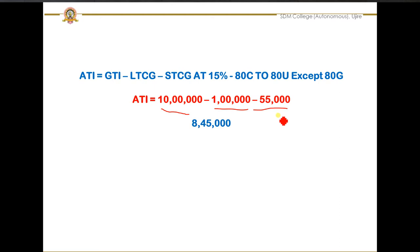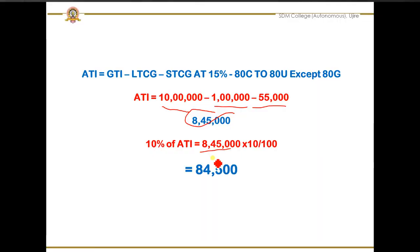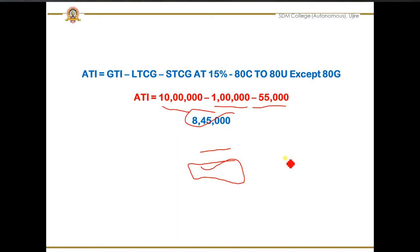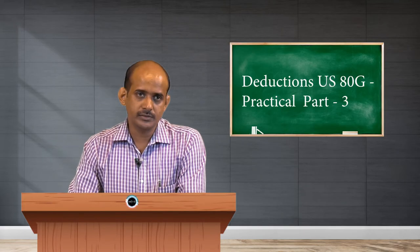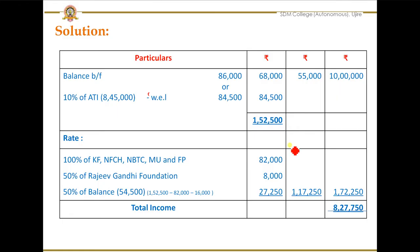We got the adjusted total income, but what we actually need is 10 percent of adjusted total income. When we apply 10 percent on the adjusted total income of rupees 8,45,000, we get the answer 84,500. This was the answer needed for further calculations. Now, comparing the actual donation of 86,000 with 10 percent of adjusted total income of 84,500 — whichever is less — the answer is 84,500.